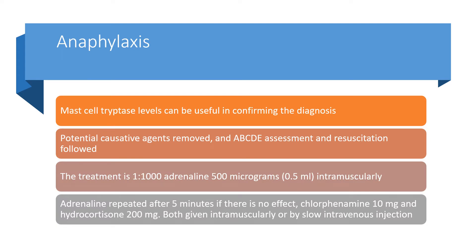Anaphylaxis is another cause of maternal collapse. Mast cell tryptase levels can be used to confirm the diagnosis, and potential causative agents should be removed. An ABCDE approach should be used in assessment and resuscitation. Treatment is 1 in 1,000 adrenaline — that's 500 micrograms, 0.5 ml given IM — which can be repeated every five minutes if there is no effect. Chlorphenamine 10 mg and hydrocortisone 200 mg should both be given IM or by slow IV injection.